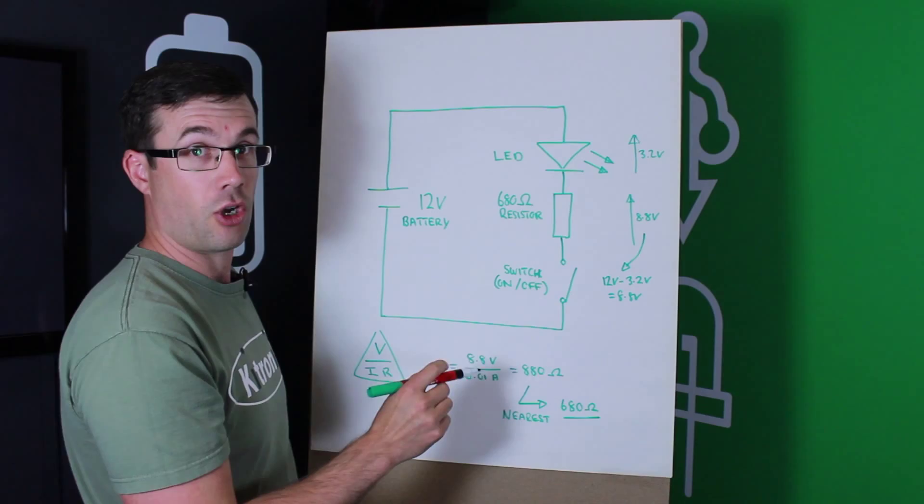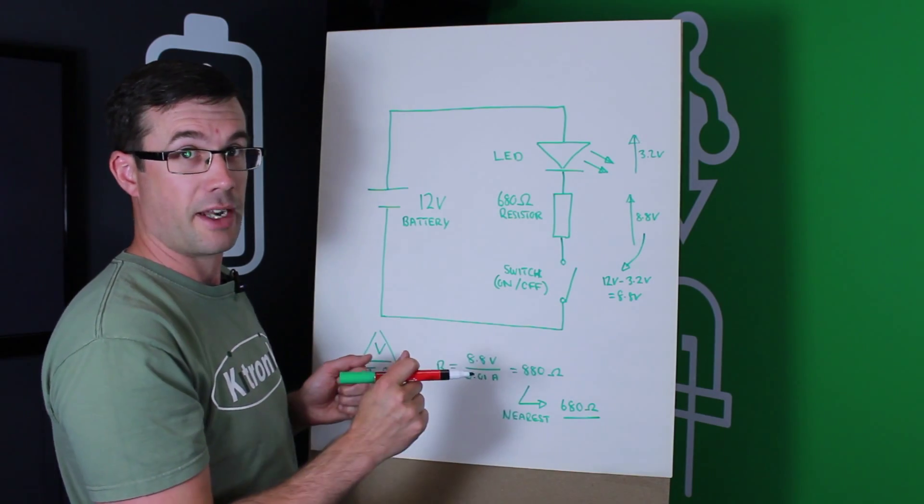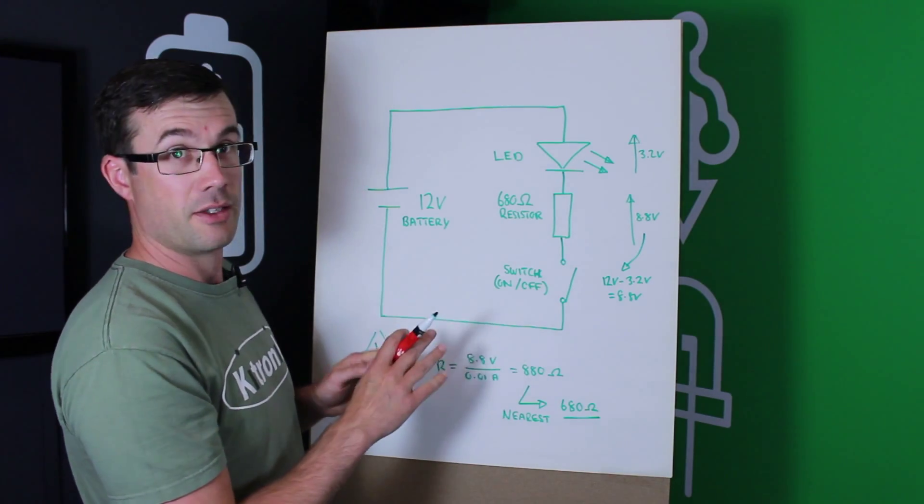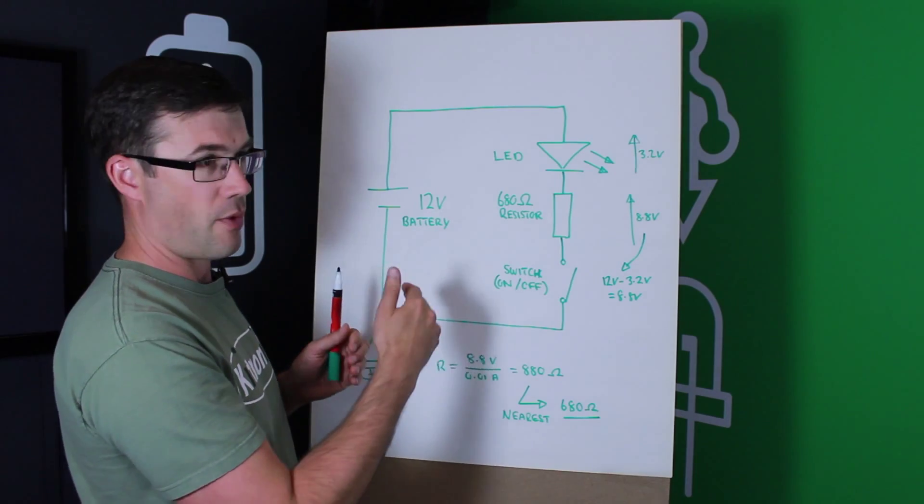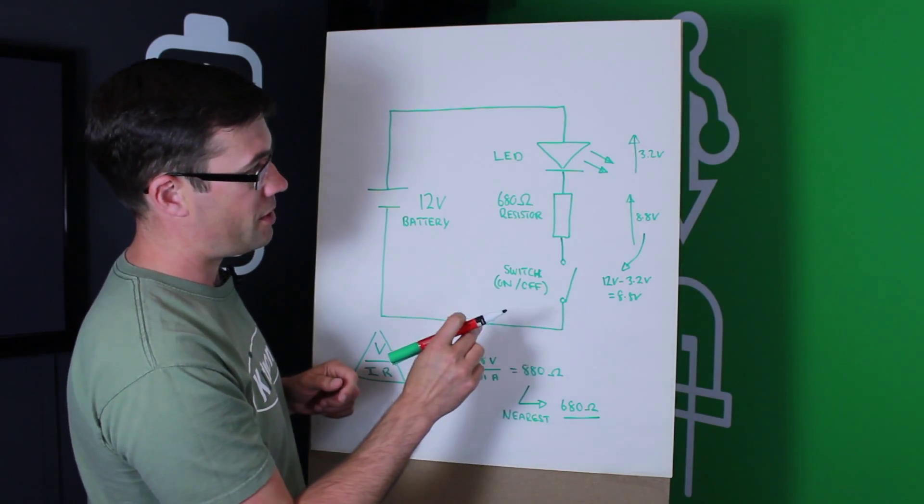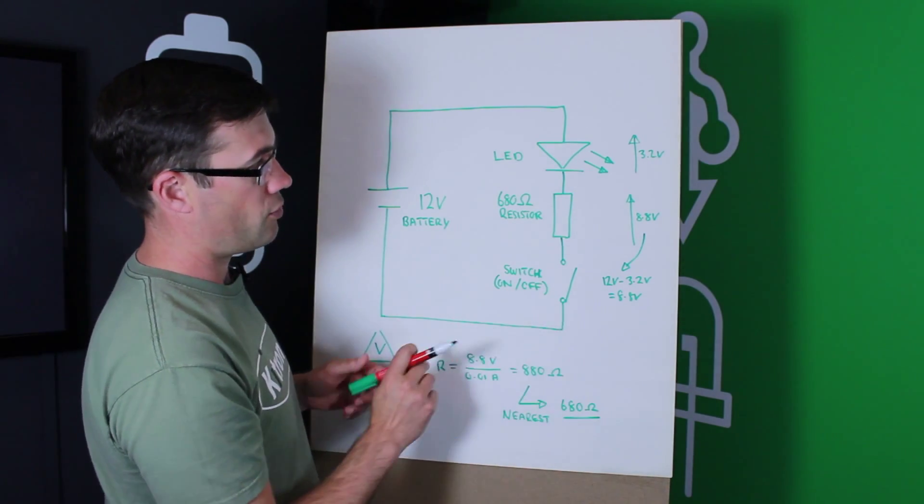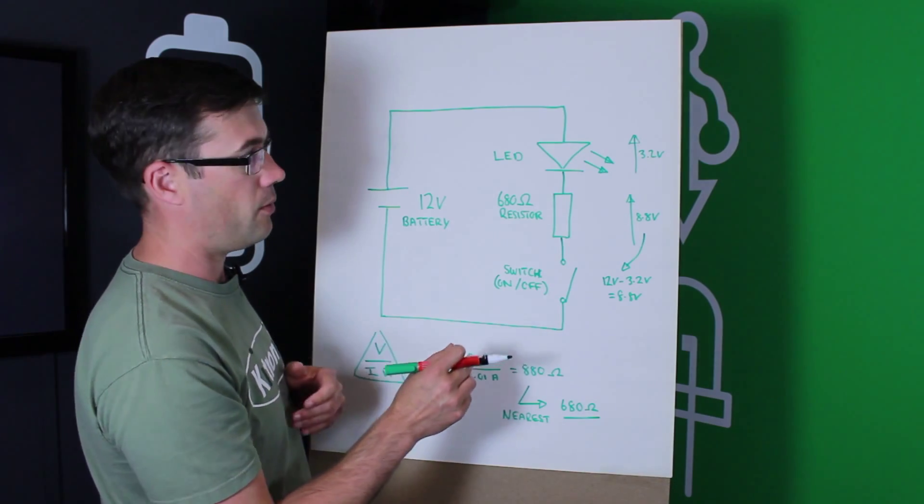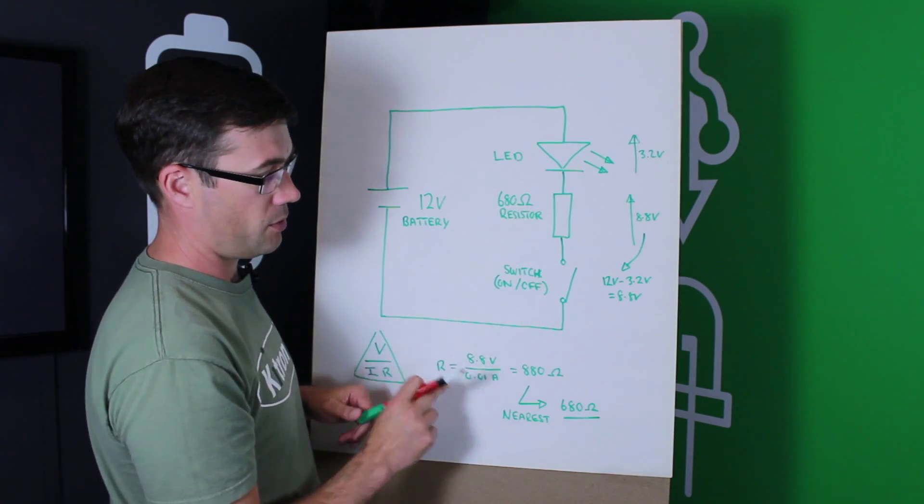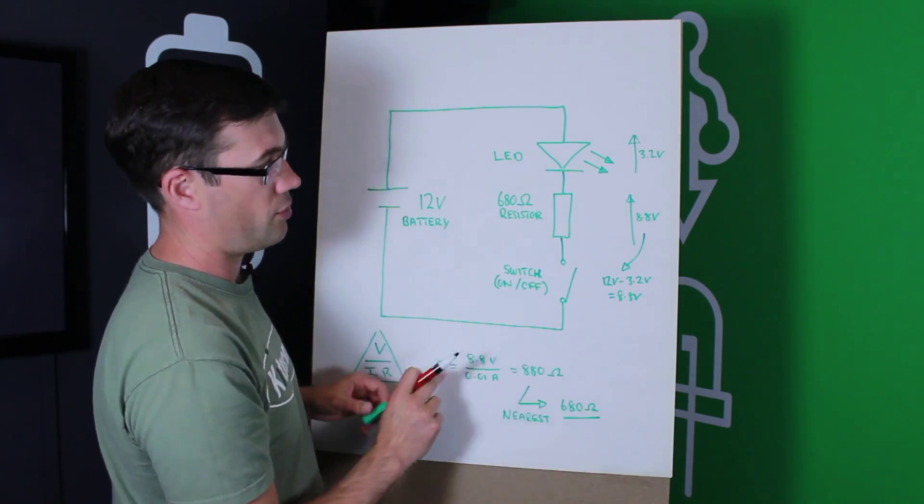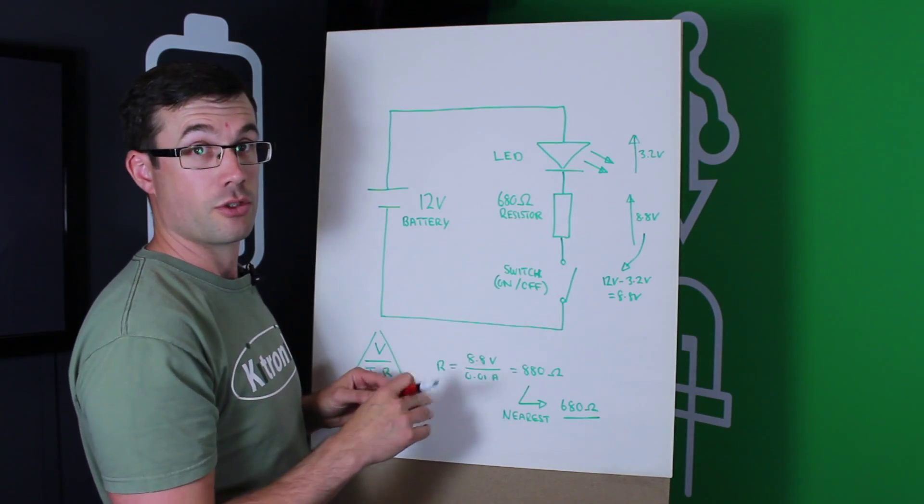But unfortunately, we can't pick resistors of absolutely any value, because they're only made in preferred values, and they're in ranges. So, the nearest resistor to 880 ohms, that's easily available, is 680 ohms. So, the nearest resistor is 680 ohms, and that's what we've chosen to use in the circuit.